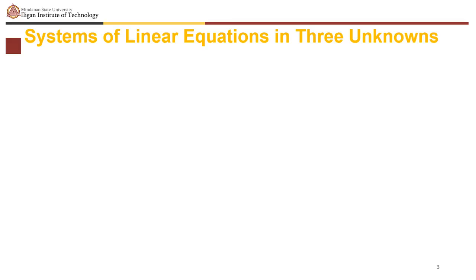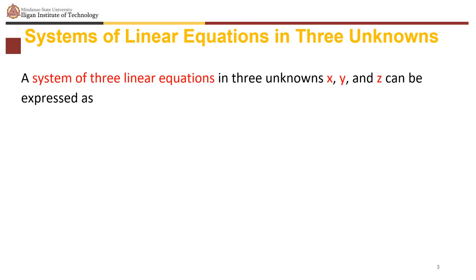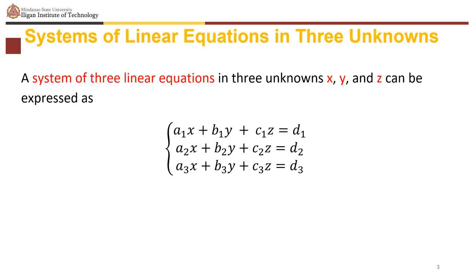A system of three linear equations in three unknowns x, y, and z can be expressed as: a sub 1 x plus b sub 1 y plus c sub 1 z equals d sub 1; a sub 2 x plus b sub 2 y plus c sub 2 z equals d sub 2; and a sub 3 x plus b sub 3 y plus c sub 3 z equals d sub 3, where a sub 1, a sub 2, a sub 3, b sub 1, b sub 2, b sub 3, c sub 1, c sub 2, c sub 3, d sub 1, d sub 2, d sub 3 are all constants.